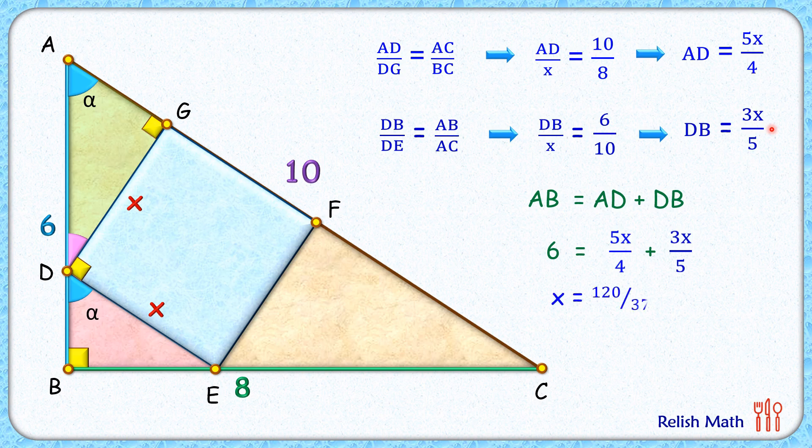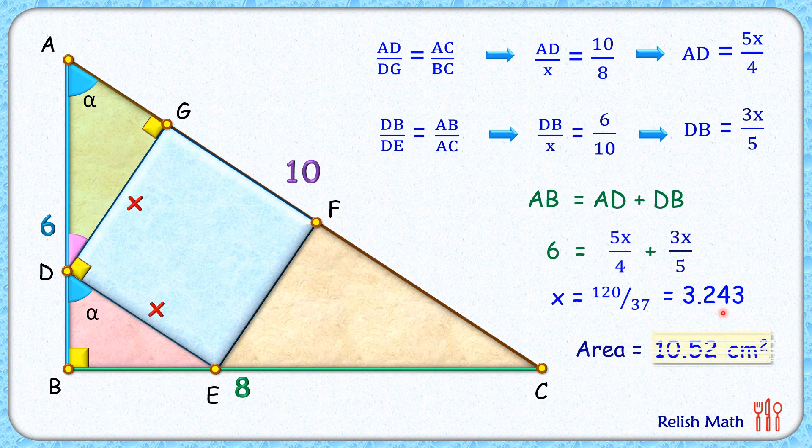Solving it in terms of x, we'll get x as 120 upon 37 which in decimals is 3.243 centimeters, and the area of the square will be the square of this, or area of square is 10.52 centimeter square, and that's our answer.